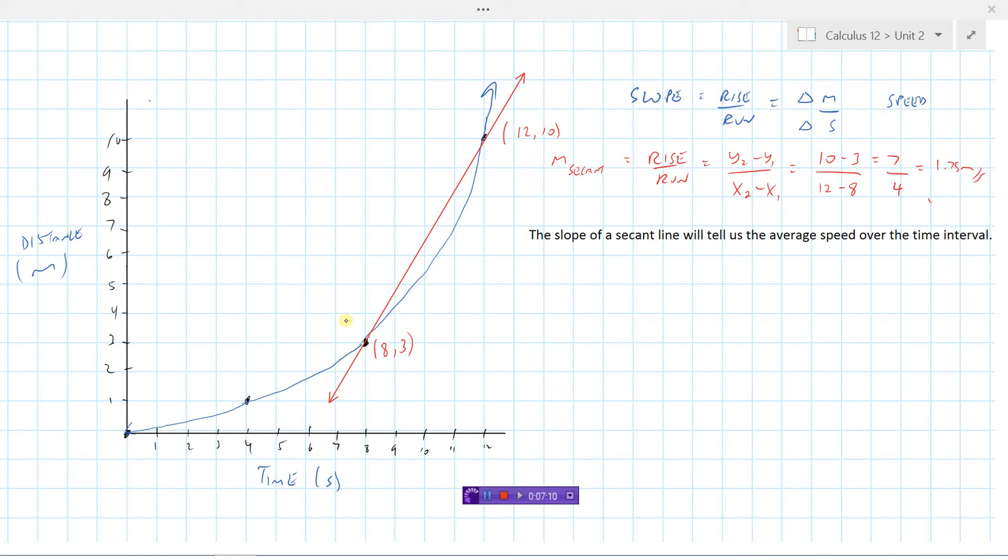Once we get up to about 11 and 12 seconds the speed of the particle is actually faster than what the average is. But between 8 and 12 seconds the average speed on that interval is 1.75 meters per second because the curves start and end at the exact same spot. So just remember whenever you find the slope of a secant line, if we've got a distance time curve, we found the average speed on that interval.